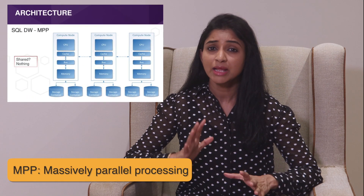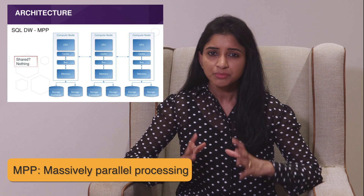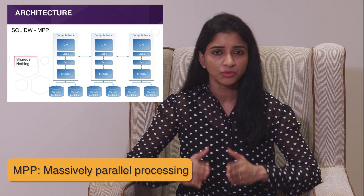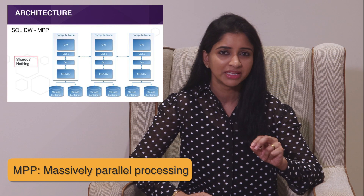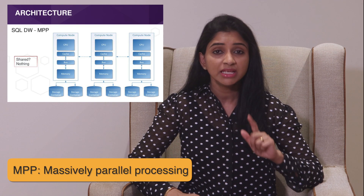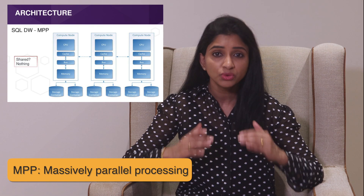Now let us look at an MPP architecture — Massively Parallel Processing Architecture. It is a computing framework that uses CPUs in parallel to execute a single program, putting it very simply. A main difference between SMP and MPP is that with an MPP, each CPU has its own memory to prevent delays. With SMP, you could experience delays when all the CPUs attempt to access the single shared memory at the same time. In a way, you can even consider an MPP system as a bunch of SMP systems coupled together.